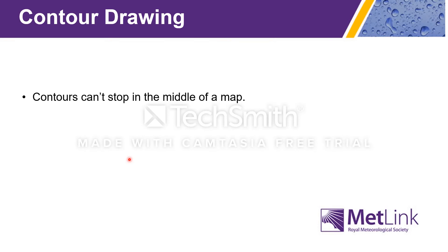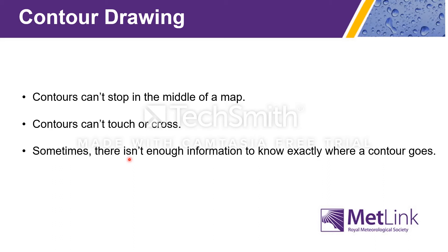Remember, contours can't stop in the middle of the map, but they do stop at the edges. They can also join up to make a complete circle. Contours can't touch or cross — that would imply it was two different temperatures simultaneously. Sometimes there isn't enough information to know exactly what a contour does, and there is more than one way you could draw it.